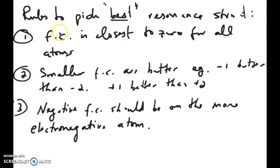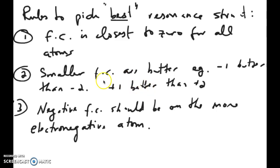The first rule is you want your formal charge to be as close to zero as possible for all atoms. Generally speaking, atoms don't really have charges when they're bonded. If they have charges, they're not as stable. So it's best to have a model where formal charges are close to zero — either zero, minus one, or plus one. Minus two or plus two is not as good. The second rule is to have formal charges that are fairly small if you have to have one.